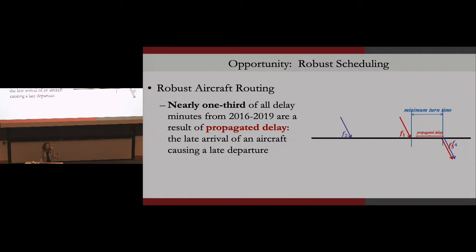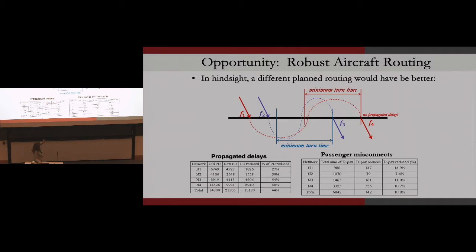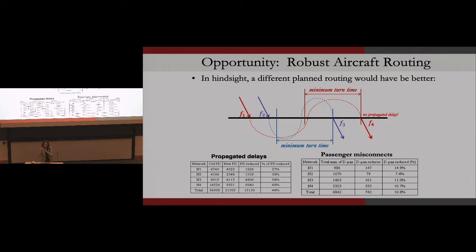Why don't we think about delay propagation when we assign aircraft to flights? It required a simple change in the objective function to minimize the expected propagation of delay. As a result, you end up with a solution that puts slack in your system where you need it. By creating new aircraft routings and simulating through actual aviation system days, we found the airline doing this went from third to first in on-time rankings for that period, and reduced the number of passengers who missed connections and experienced extensive delays by 10%.